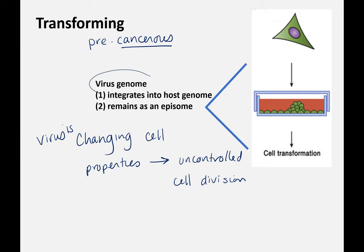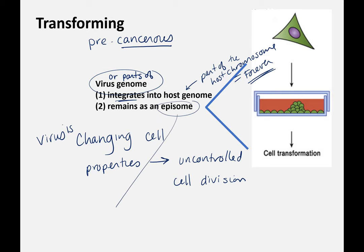There are also transforming viruses, which can be precancerous or cancerous. What they're doing is changing cell properties, which result in uncontrolled cell division — basically the definition of cancer. Here's a normal cell infected by a transforming virus: instead of cells staying in a nice monolayer, they start to clump and grow out of control, not following the correct signaling. This can lead to cancer or benign tumors. The virus genome or parts of it remain in the cell — some viral genomes can actually integrate into the host genome, becoming part of the host chromosome.